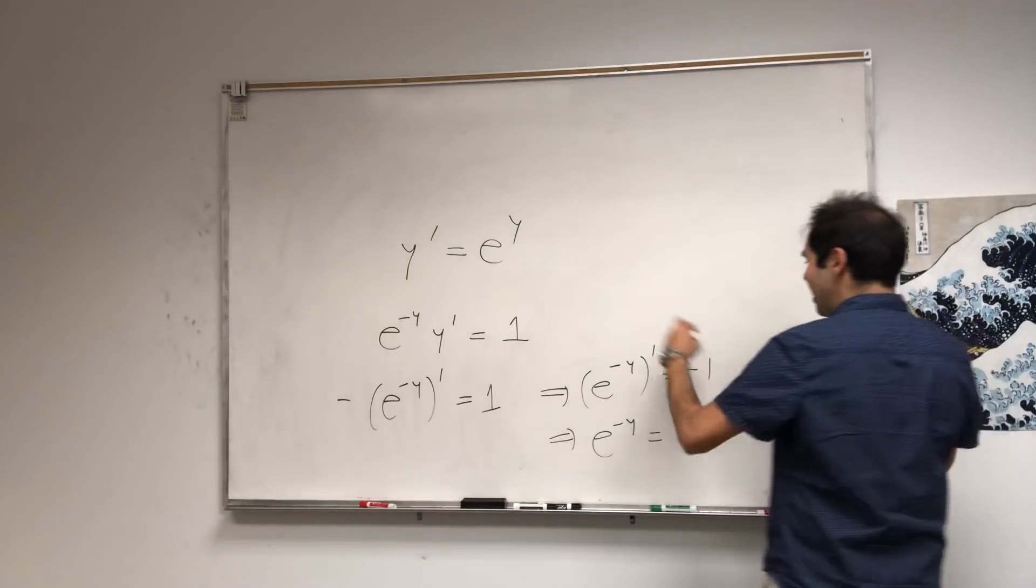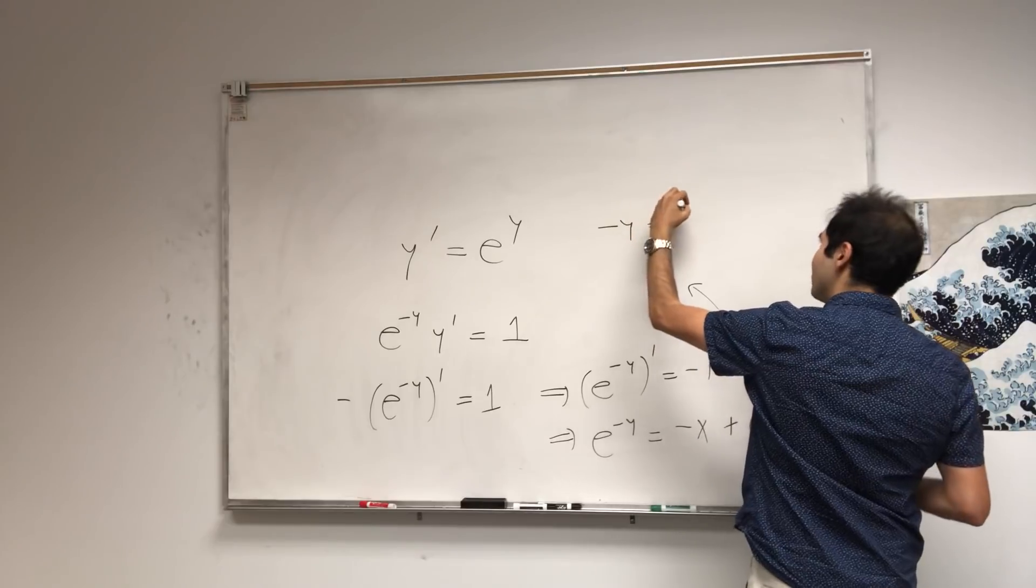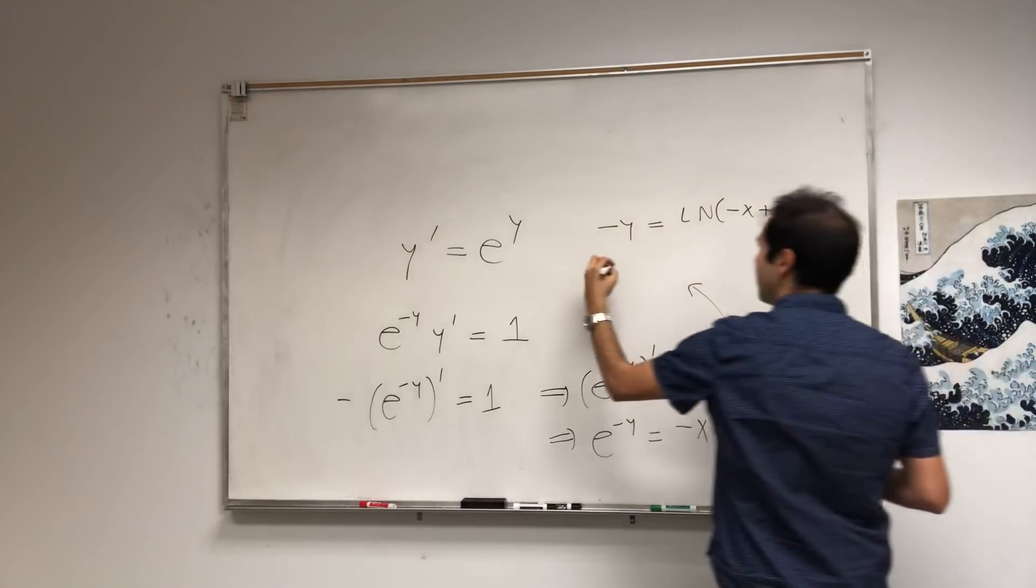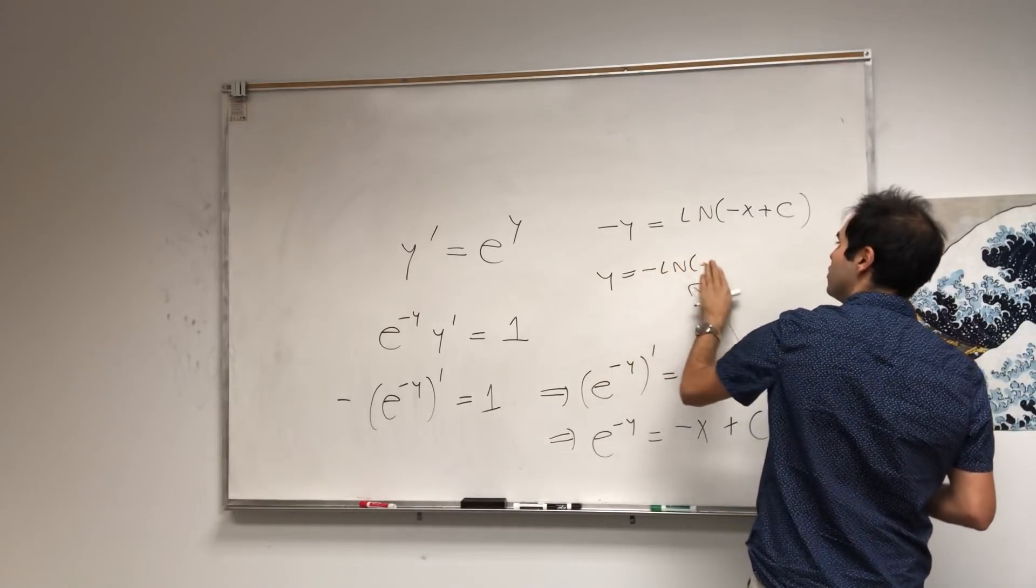And so minus y, you just take ln of that, is ln of minus x plus c. And then y becomes minus ln of, if you want, c minus x.